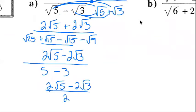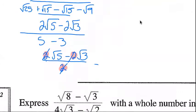And look — you can see that all three of these coefficients will divide by 2, divide by 2, divide by 2. So those 2's are all going to cancel, which is just going to leave me square root 5 minus square root 3.